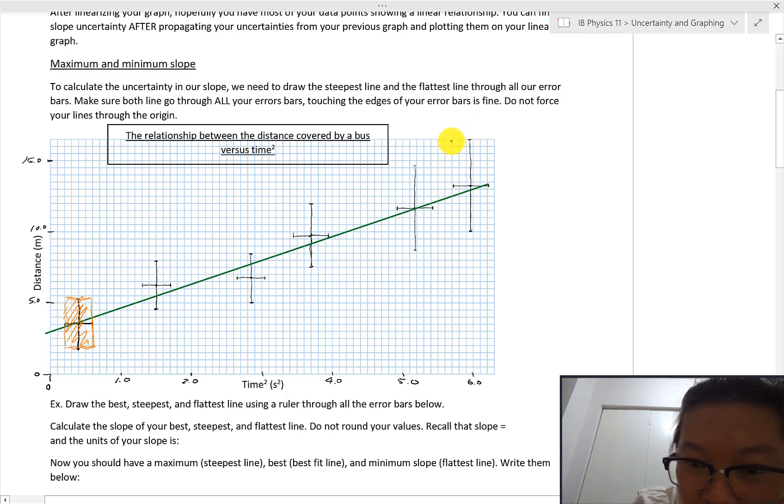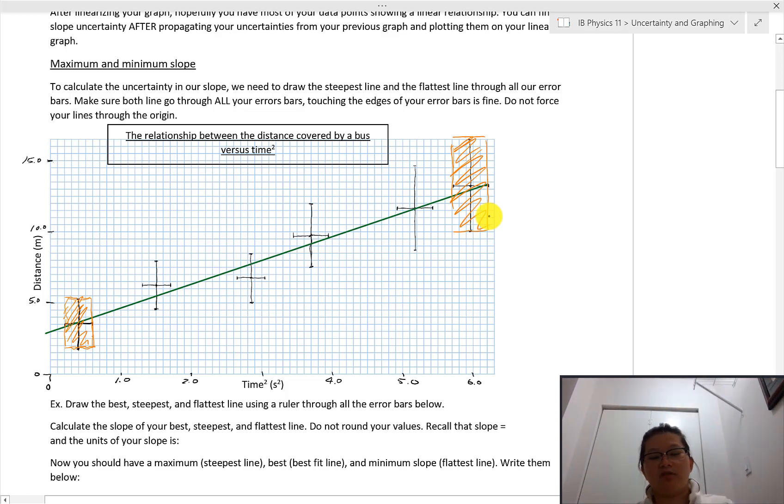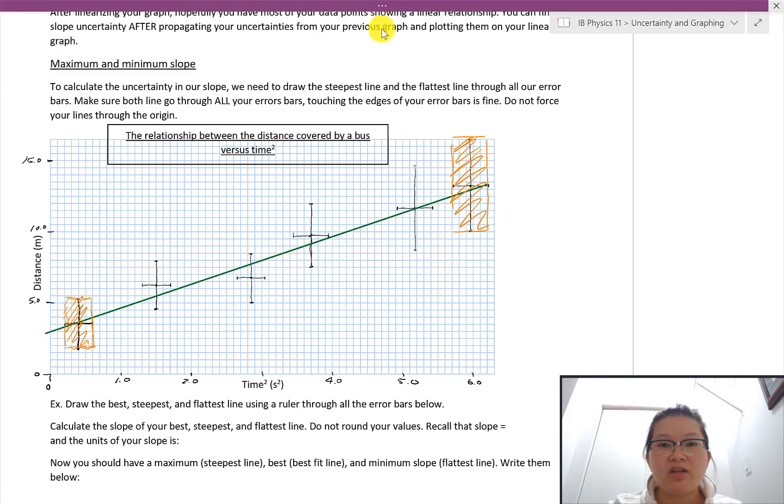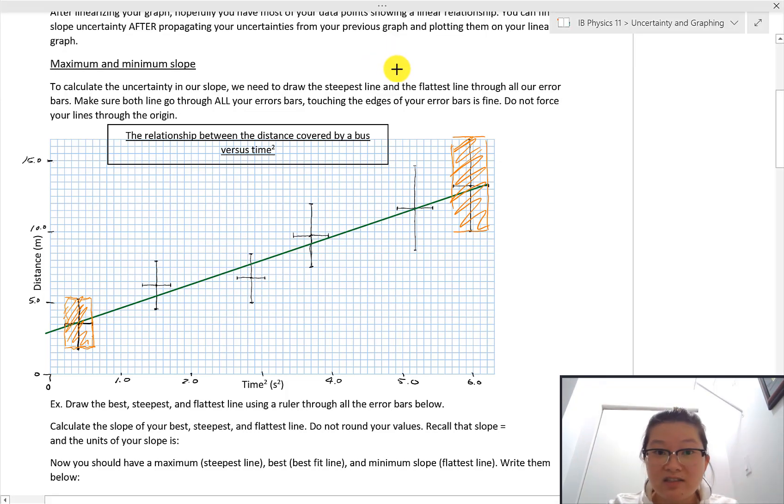I kind of can shade this in if you want to, whatever. And I'll do it for the last one, because those are the two error bars that I will use when I'm going to determine my steepest slope and my minimum slope. I'm going to need those two lines. So let's form a line. I'm going to start with my steepest one.